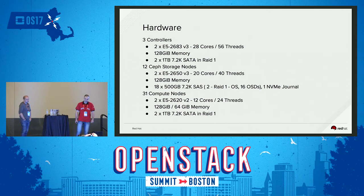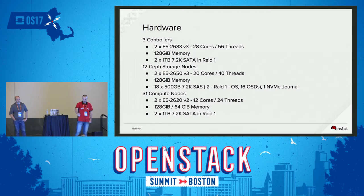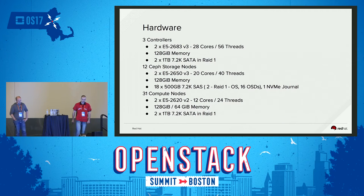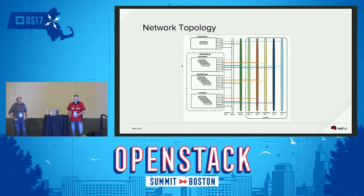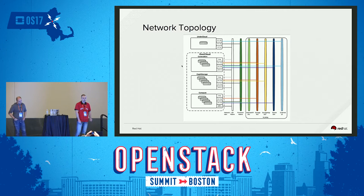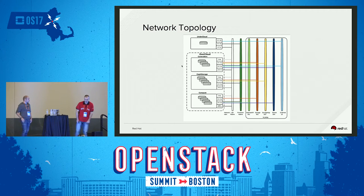Here's the hardware I was able to use. The Ceph nodes had a lot of disks, including an NVMe drive for the journal. The compute nodes had either 128 or 64 gigabytes of memory — that came back to bite me later. The topology used two NICs, both 10 gig, with TripleO, so we had an undercloud and an overcloud. The undercloud is not the cloud under test — I used it to orchestrate my workload and hit the APIs to create workload on the overcloud.